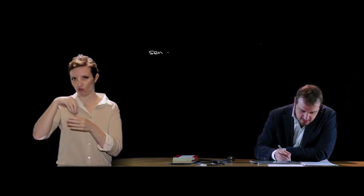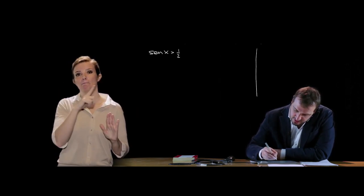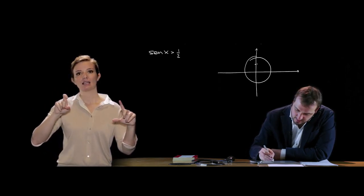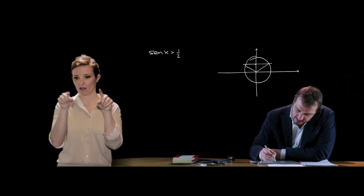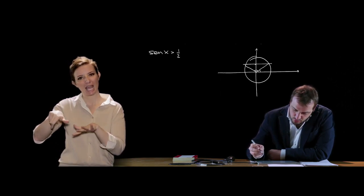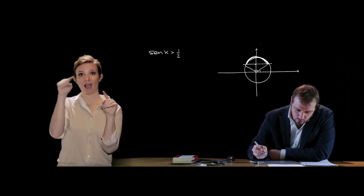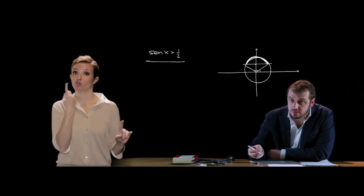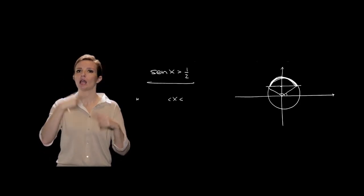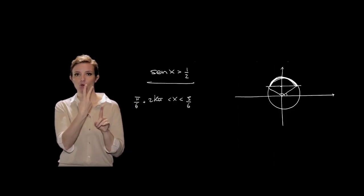Facciamo due rapidi esempi. Se abbiamo sen x > 1/2, aiutandoci con la circonferenza goniometrica: sen x = 1/2 corrisponde agli angoli π/6 e 5π/6. Tutti gli archi con seno maggiore di 1/2 costituiscono l'insieme delle soluzioni: x compreso tra π/6 + 2kπ e 5π/6 + 2kπ.